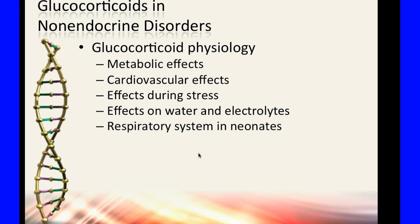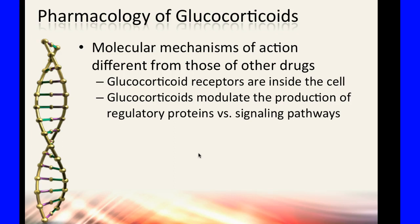Glucocorticoids have multiple effects on the body. Metabolic effects include effects on blood sugar, although the pancreas is the main focus for that. There are cardiovascular effects and effects during stress — anything during stress can bring cortisol up. Increased cortisol during stress is a known predictor of weight gain. It also has effects on water and electrolytes, the respiratory system, and neonates.